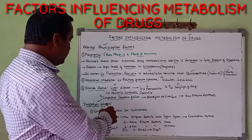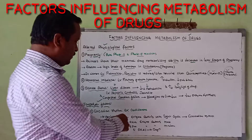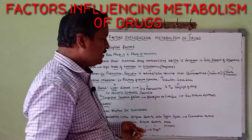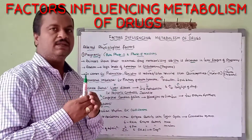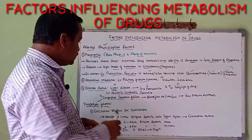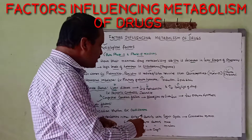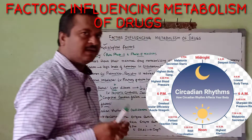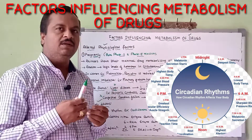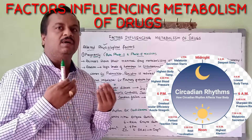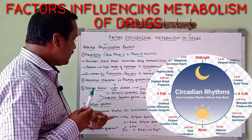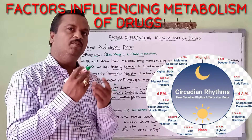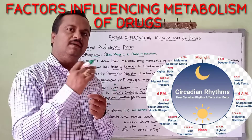Another factor is the temporal factor, that is circadian rhythm. This refers to the variation in enzyme activity with the light cycle — morning, afternoon, or evening. Whatever the light cycle may be, our enzyme activity is different accordingly.